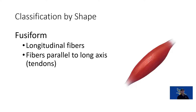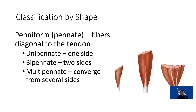Muscle fibers are oriented in different ways. Fusiform, longitudinal, or parallel muscles have fibers running in a line from tendon to tendon — linear muscles with sarcomeres in series. Pennate muscles have a diagonal orientation — muscle fibers are at an angle to the tendon. They can be unipennate (one-sided), bipennate (two-sided), or multipennate, where multiple angles come in from multiple directions onto that tendon.